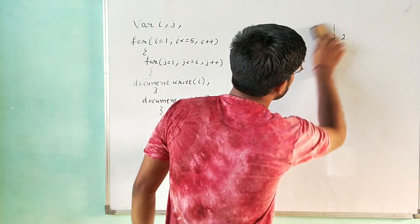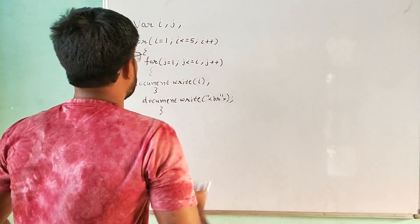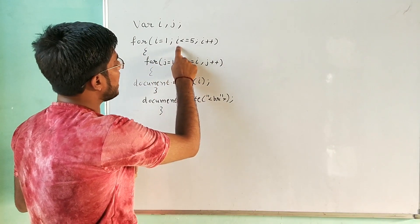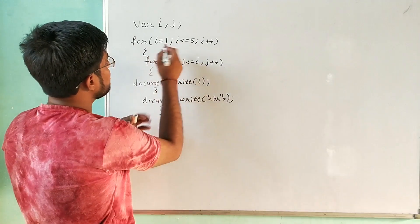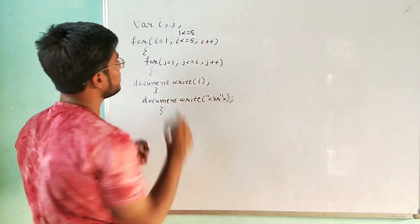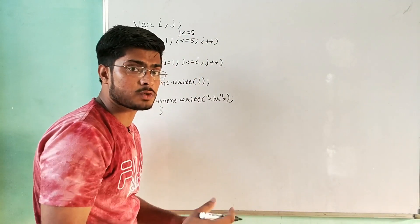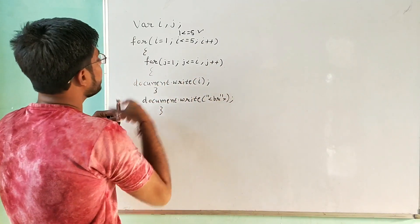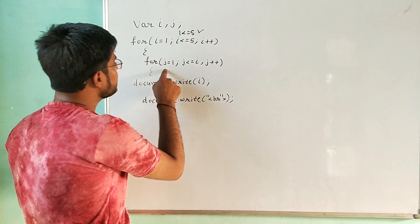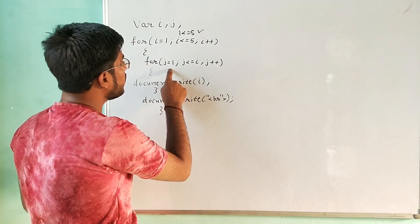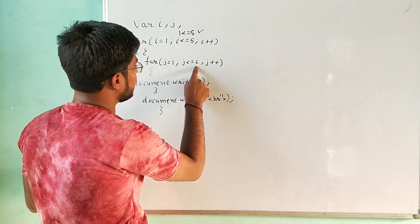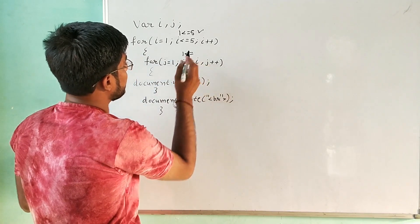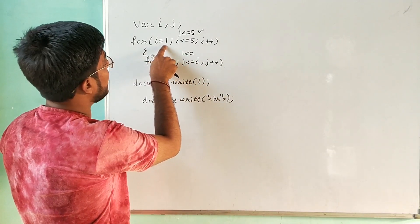i is initialized to 1. It checks the condition: is 1 less than equals to 5? Yes, condition is true. So it goes to the inner for loop, where j is initialized to 1. The condition is j less than equals to i, so it checks: is 1 less than equals to 1? Yes, the condition is true because 1 is equal to 1.